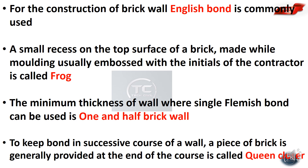To keep the bond in successive courses of a wall, a piece of brick is generally provided at the end of the courses. This is called a queen closer.